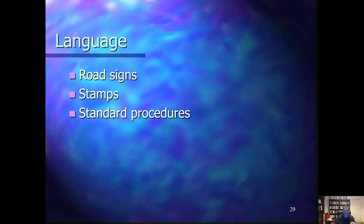If you look at the transportation system from the perspective of its language, there are road signs — an established set of road signs used in most countries, which usually map from one country to another, allowing you to use the roads: speed limit signs, crossing signs, and other signs. You can look at stamps and other standard procedures in transportation, be that transportation of letters or goods, and the various procedures at customs — standard paperwork, standard checks, and so on. All these constitute the language of the transportation system.